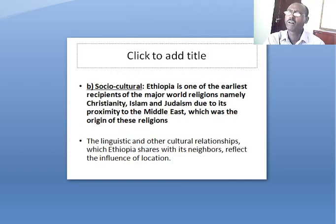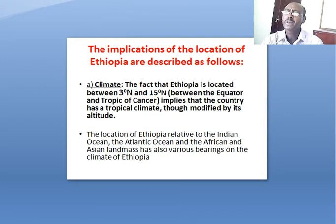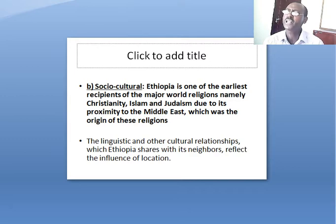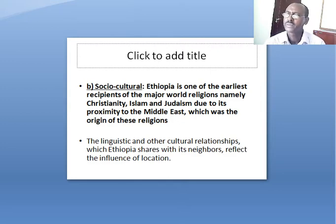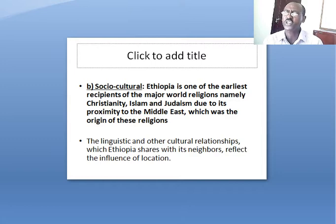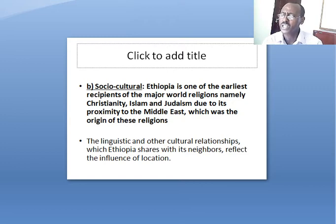Regarding social and cultural conditions, Ethiopia is one of the earliest recipients of the major world religions — namely Christianity, Islam, and Judaism — due to its proximity to the Middle East, which was the origin of these religions. The linguistic and cultural relationships which Ethiopia shares with its neighbors reflect the influence of its location.